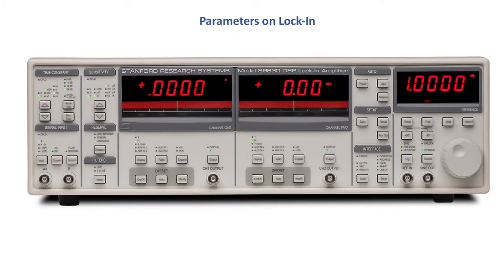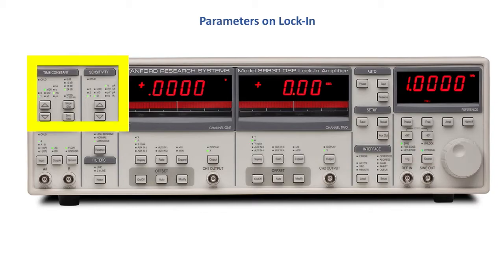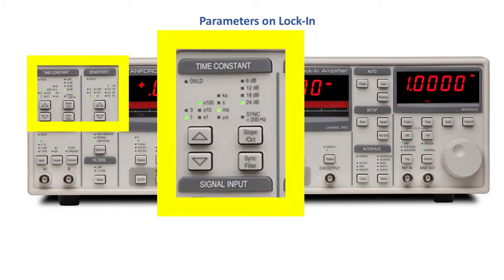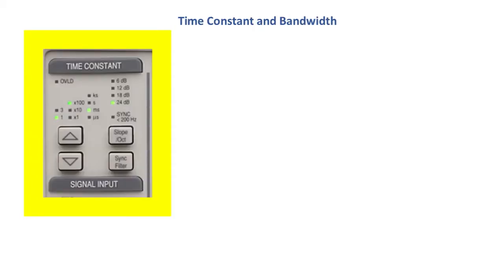Now other important parameters on the lock-in come from that top left corner we see the time constant with a couple different times as well as some bandwidth filters the 6dB, 12dB, etc. and so what is the time constant?